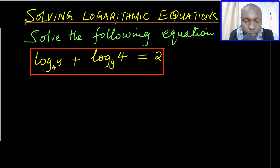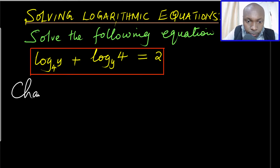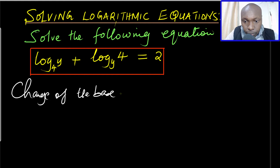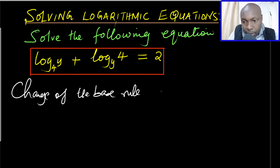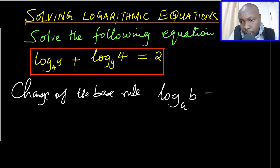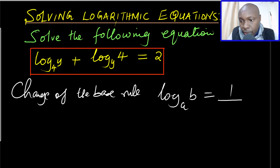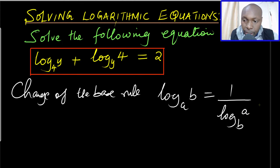Now to do this, there are rules that you need to know — the change of base rule. What does this state? If you're given log of a to the base of b and you want to change so that the base will be b and not a, this will be given by the inverse: 1 divided by log of a to the base of b.